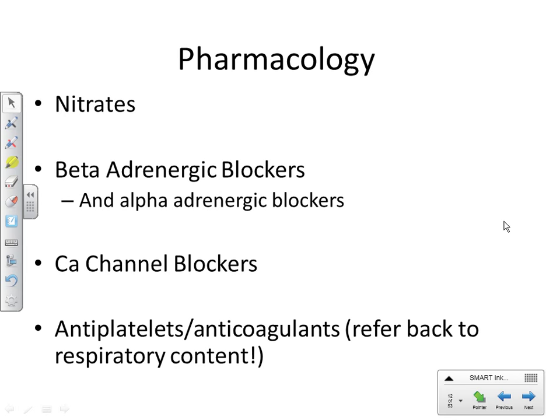Elderly male patients may be on Hytrin prescribed by their urologist for BPH. A thorough medication history ensures the cardiologist knows what other medications the patient is on — so the cardiologist doesn't add additional antihypertensives without knowing the patient is already on an alpha-adrenergic blocker like Hytrin.